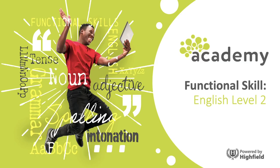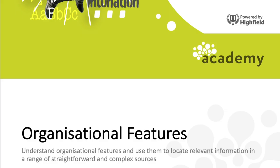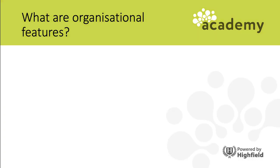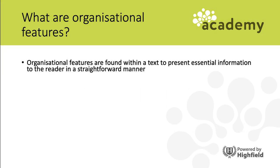This is Functional Skills English Level 2 - Organizational Features, which is subject content number 16: understand organizational features and use them to locate relevant information in a range of straightforward and complex sources. Organizational features are found within a text and they help the reader to find information and they help the writer to present the information.